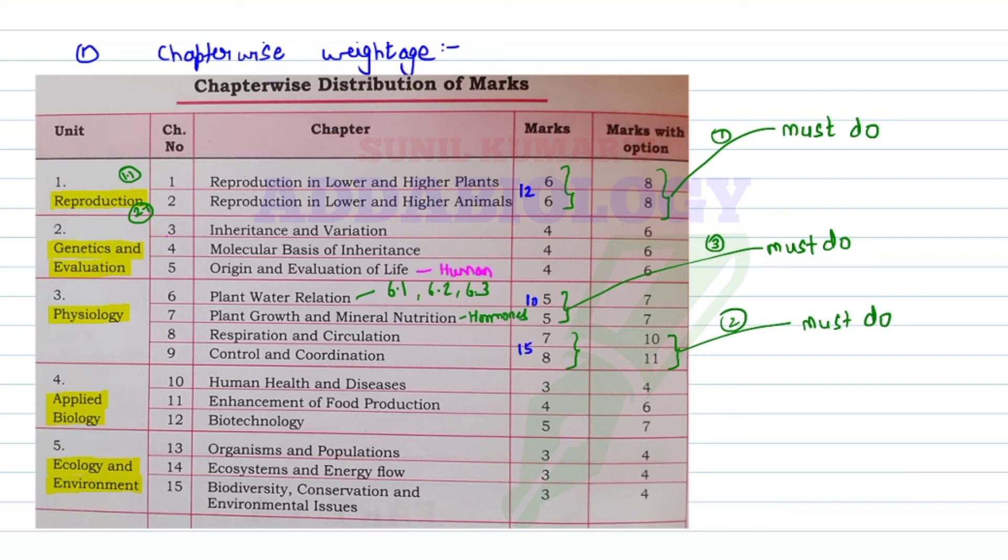After this, inheritance and variation, molecular basis of inheritance, and origin of life. These are the chapters you're going to do. You'll do chapters 3 and 4 so you can easily manage to score good marks. Very few topics are deleted from these chapters, and they carry less marks, that's why I've kept it fourth in the option to study.